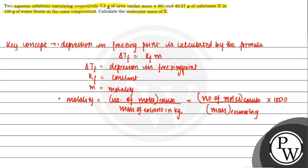So this is our formula and key concept, and we have to solve this question with it. Delta Tf, which is depression in freezing point, is the same for both solutions.